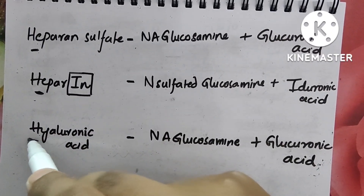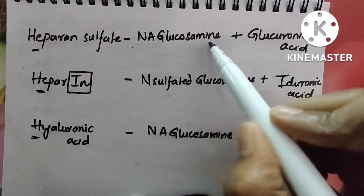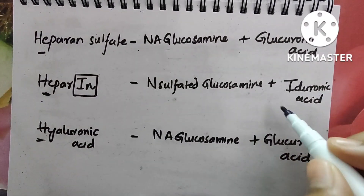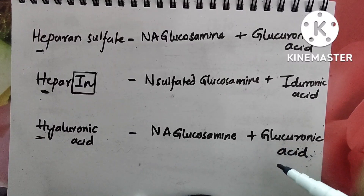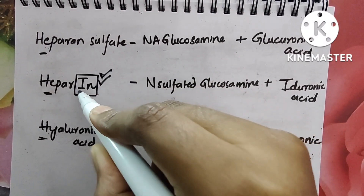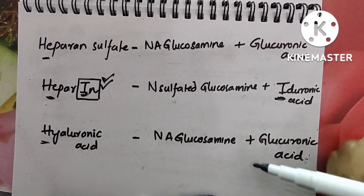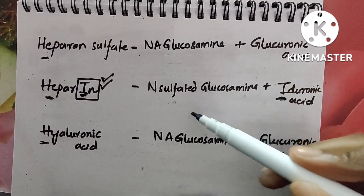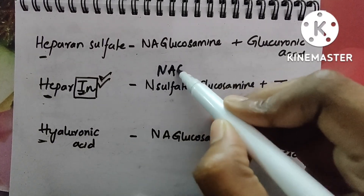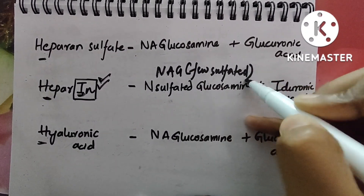For the second page — heparin, heparan sulfate, and hyaluronic acid — heparan sulfate is N-acetyl glucosamine plus glucuronic acid. Heparin is N-sulfated, so remember it has NAG (N-acetyl glucosamine) only. Hyaluronic also has NAG. There is no galactose on this page. Heparin has 'IN' in the spelling — I for iduronic acid — whereas heparan sulfate does not have that I, so it has glucuronic acid, and hyaluronic acid also has glucuronic acid.